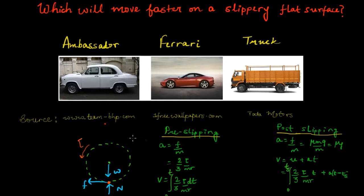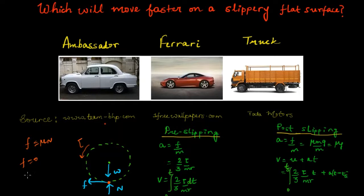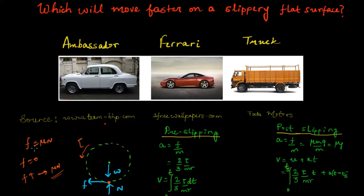This force of friction is less than or equal to μN, where μN is the maximum value. At rest, friction is zero. As you gradually apply torque, friction increases along with it, until it reaches the maximum value μN, where it becomes constant. There are two phases: phase 1, where friction is less than μN, and phase 2, where friction equals μN.